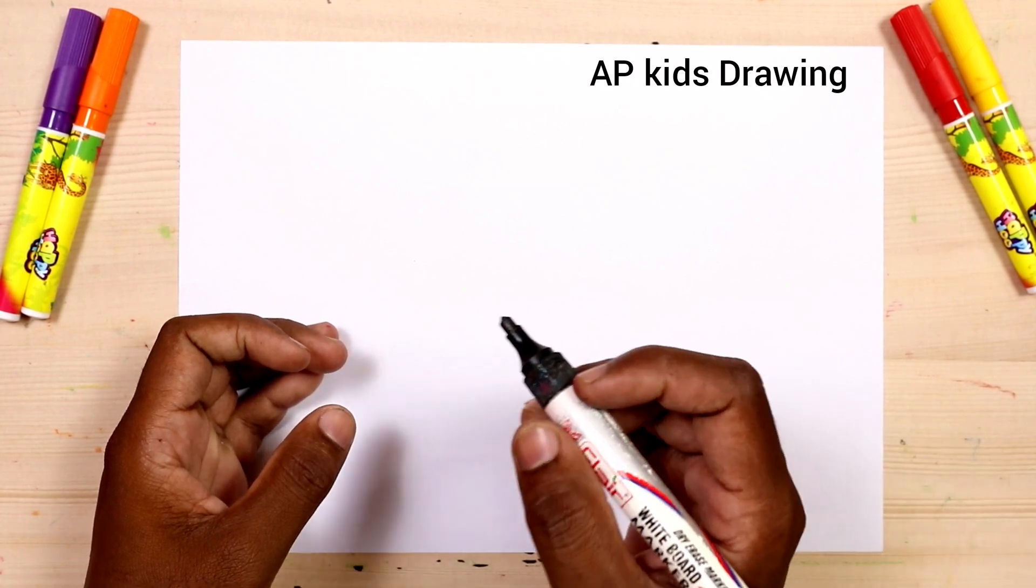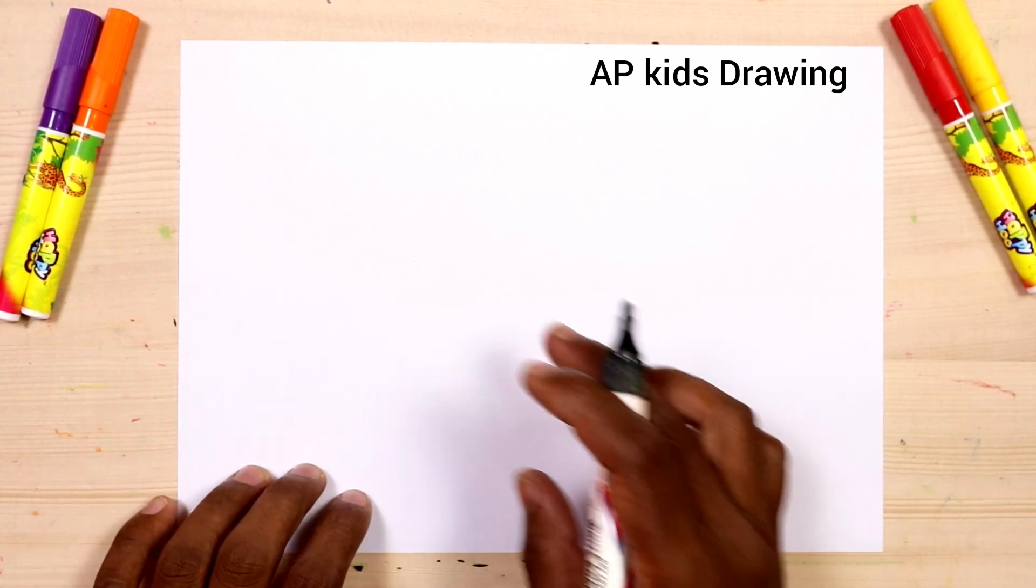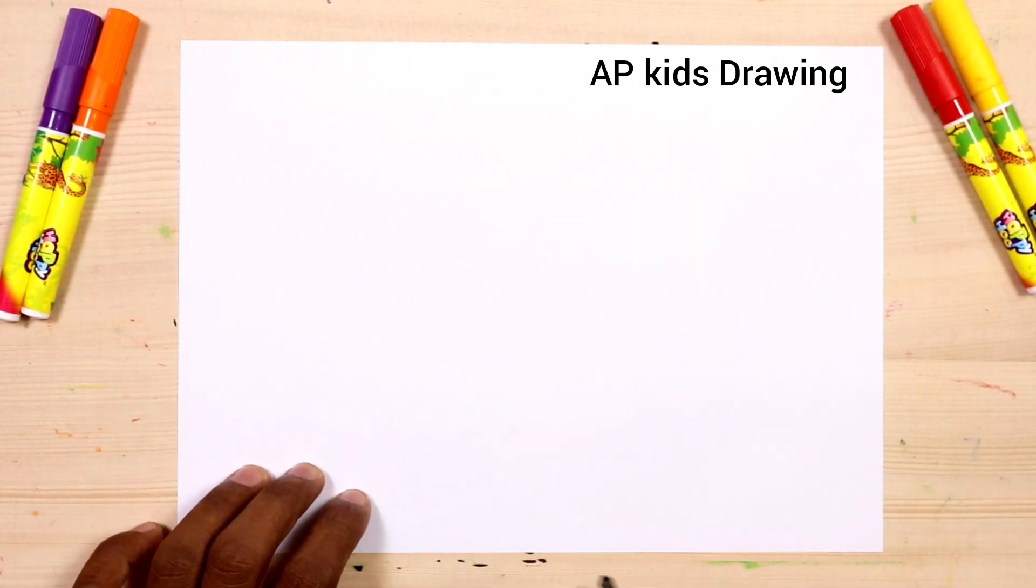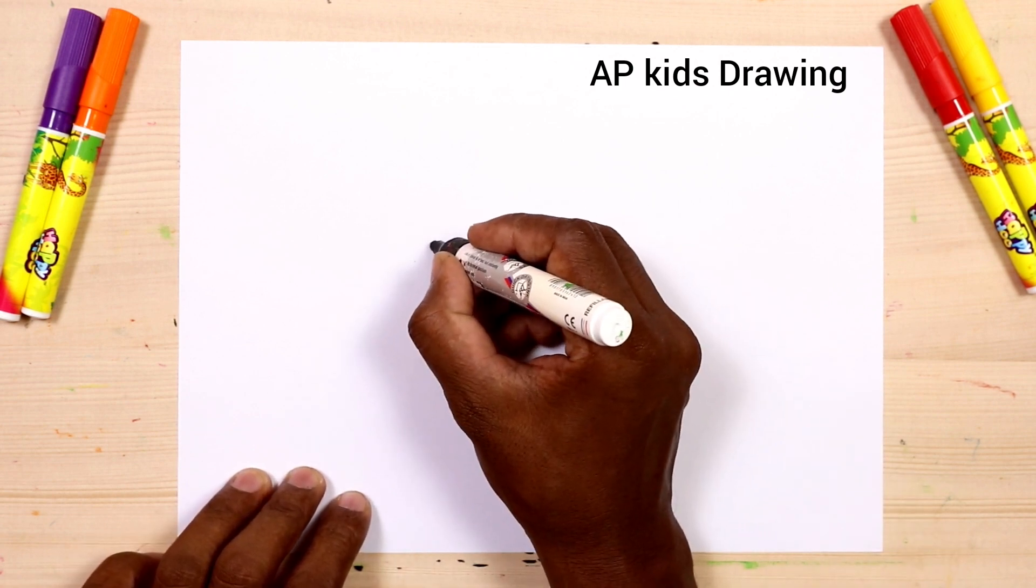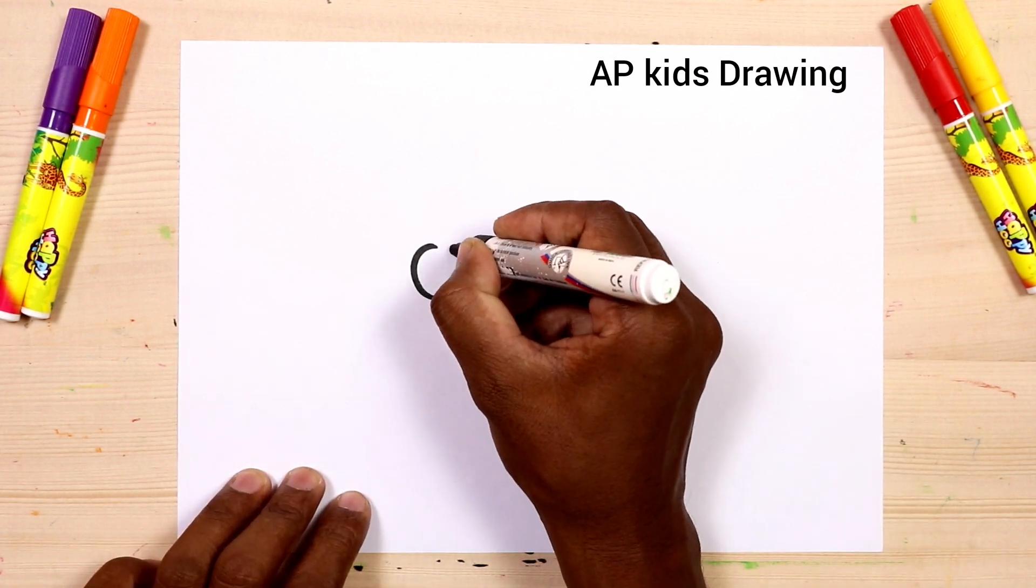Hello children, today we are drawing butterfly and flower from number 030 step by step. Firstly we write 030 on this paper, let's draw.